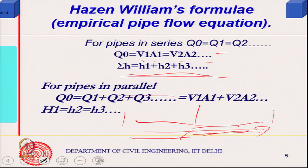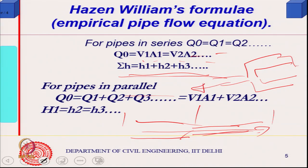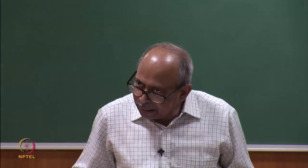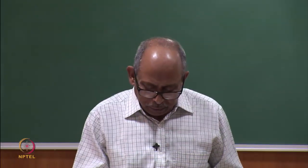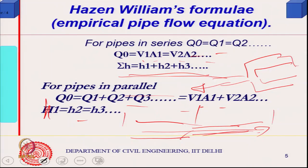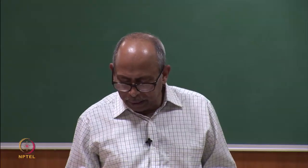If pipes are in parallel, flow would be the sum total of flow through all of them. Both pipes will be under the same constant head. So in parallel pipes, heads are the same and flow would be different for each — that is the basic principle, and we will look into the network principle a little later.